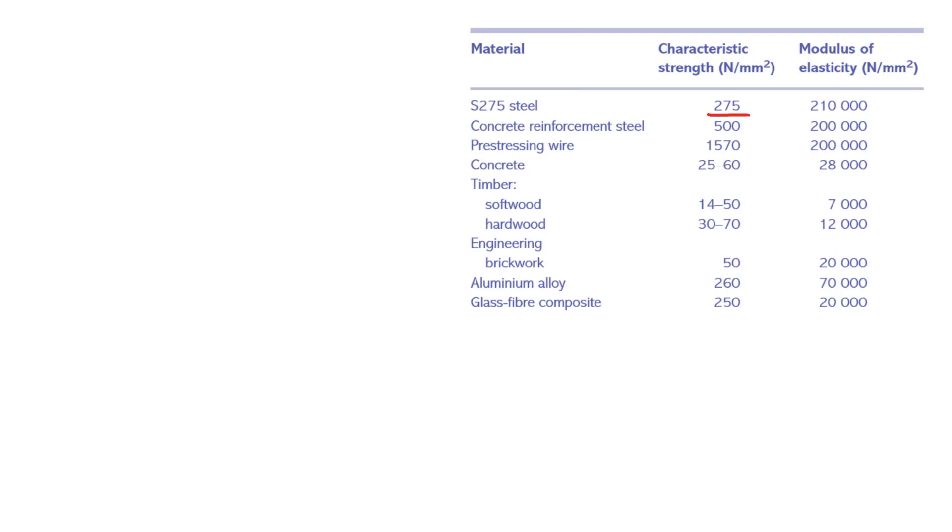This value applies to structural members when the steel thickness is up to 16 mm. For steel thicknesses between 16 mm and 40 mm, the strength is reduced to 265 N per square millimeters. Another common grade of structural steel in the UK is S355, where the equivalent characteristic yield strengths are 355 N per square millimeters up to 16 mm, and 345 N per square millimeters for 16 to 40 mm.